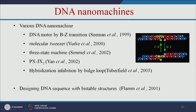The next example is DNA-based nanomachines. Various machines are available: B-Z transition, molecular tweezers, and also PX and JX2. These are the various types of DNA machines available, and we will see them one by one.